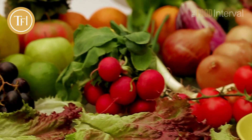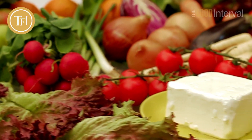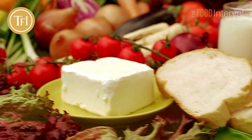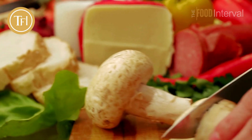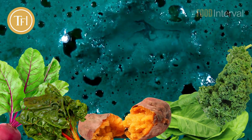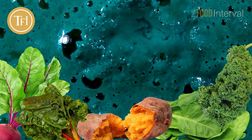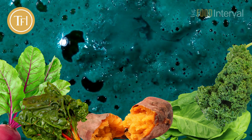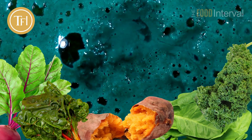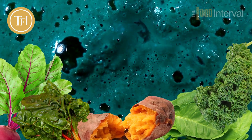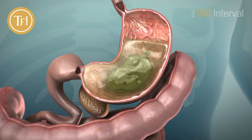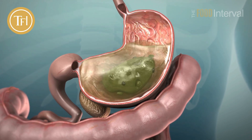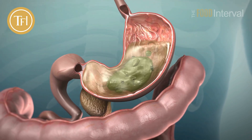Many fruits, vegetables, nuts, and whole grains contain a naturally occurring compound called oxalic acid, which people sometimes refer to as oxalate. Although small amounts of oxalic acid are not harmful, this compound can inhibit the absorption of other important nutrients.